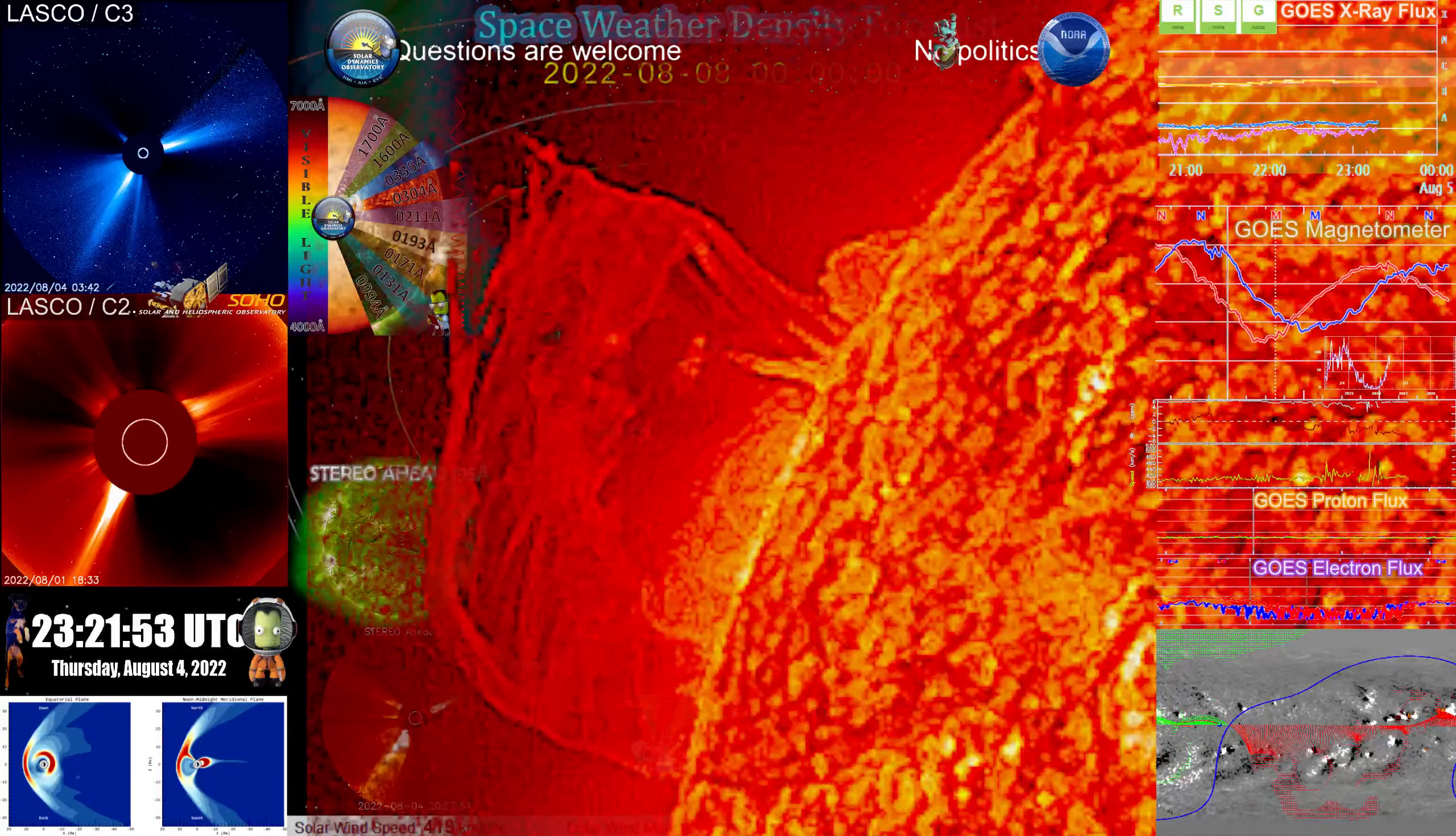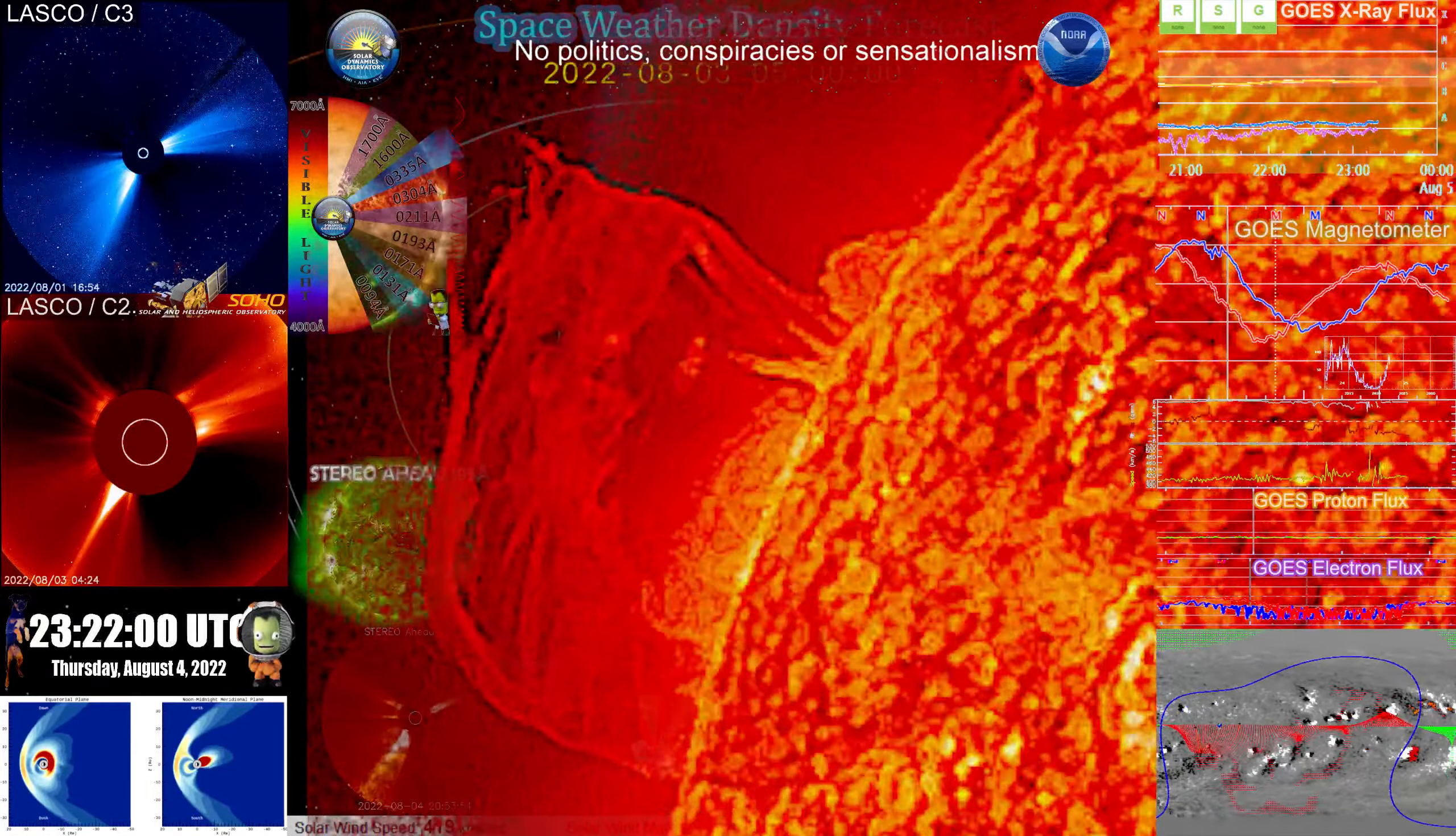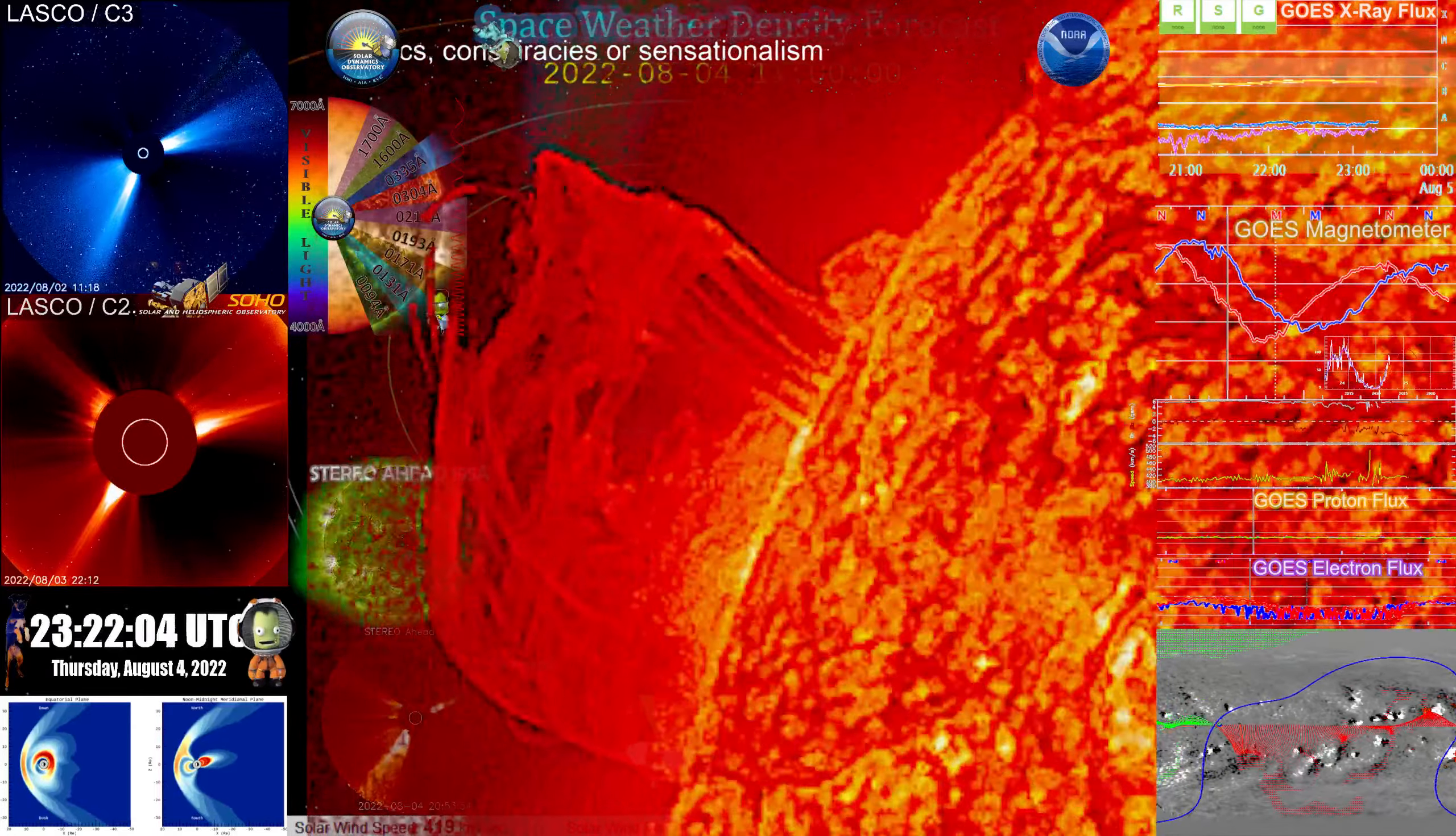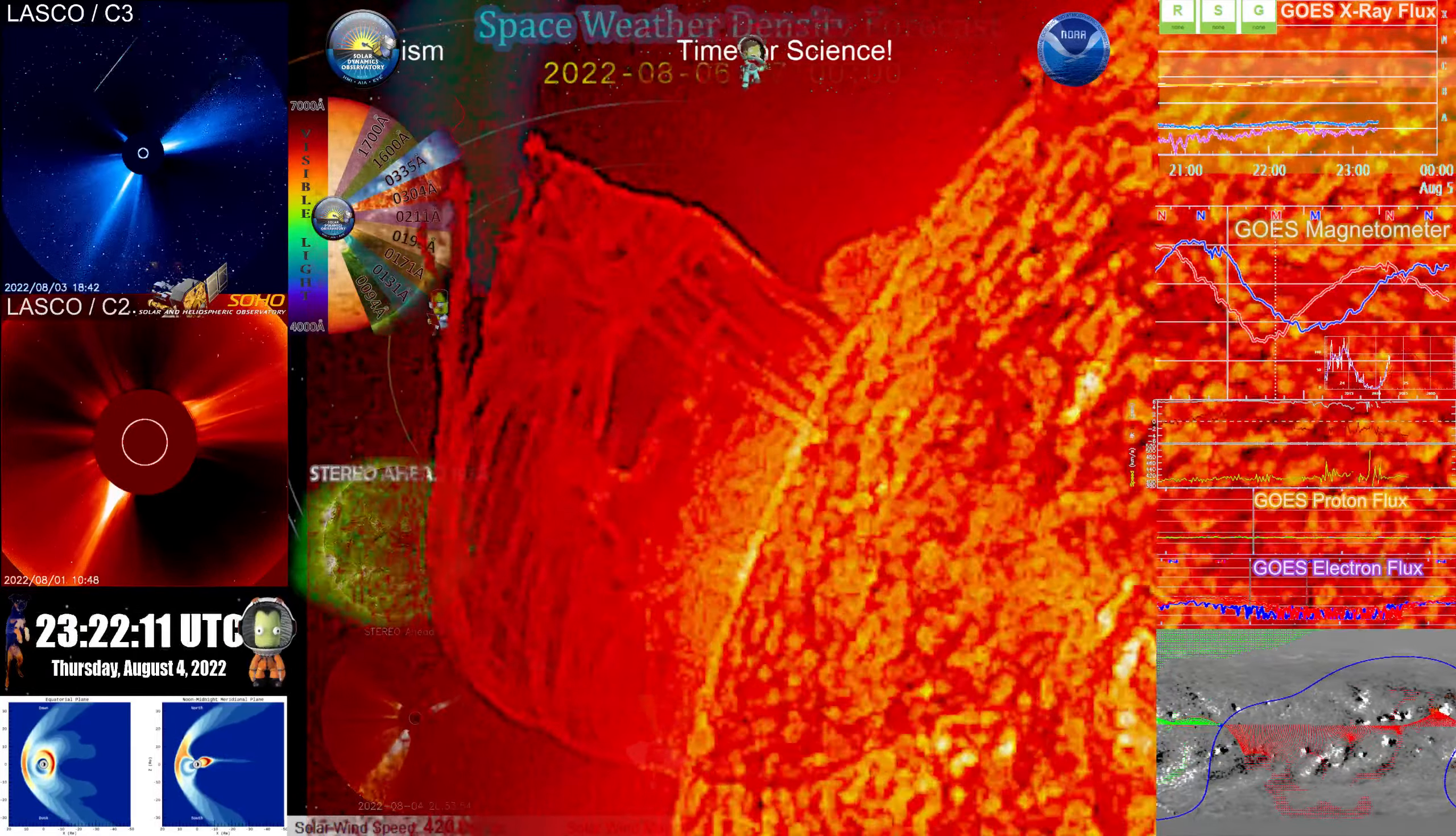Now, the coronal mass ejection, the fastest ever recorded was the Carrington event in 1859 that took approximately 17 hours to transfer from the sun to the earth. And the longest typically is about 5 days. So we can see anything between that range expectantly.